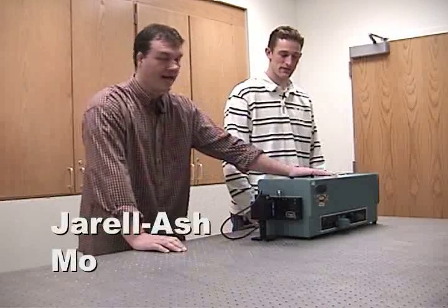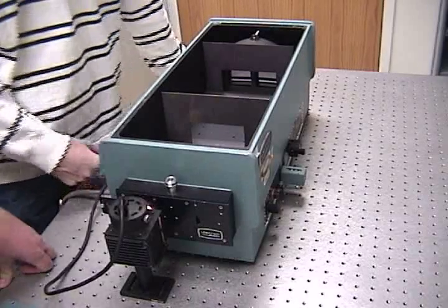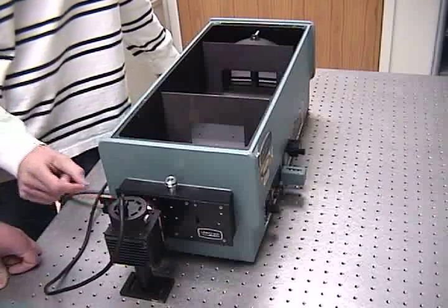We're looking at a Gerald Ash monochromator. We begin by sending white light through this first slit. Right now the slit is open very wide so we can see what's going on and also to let plenty of light through.